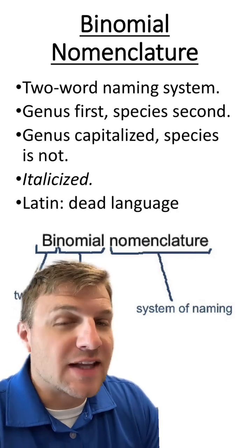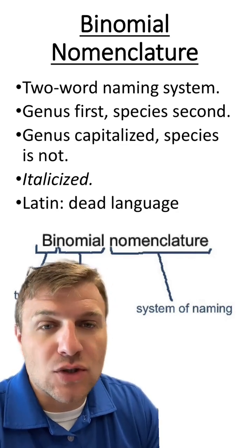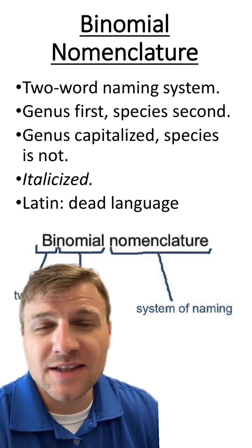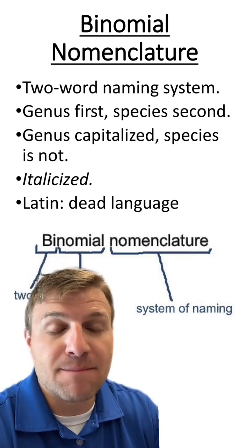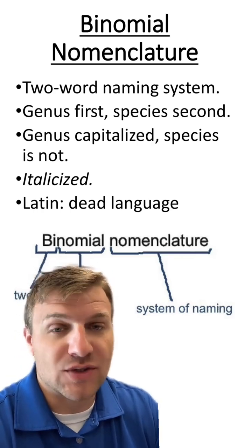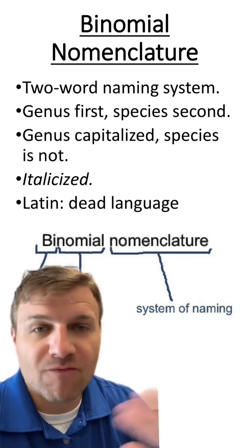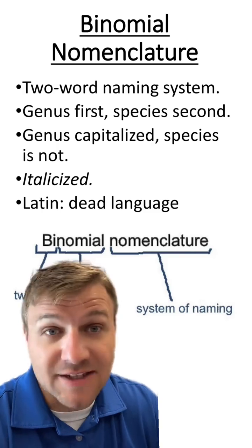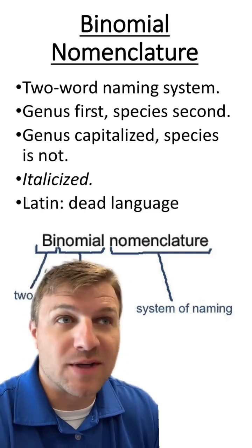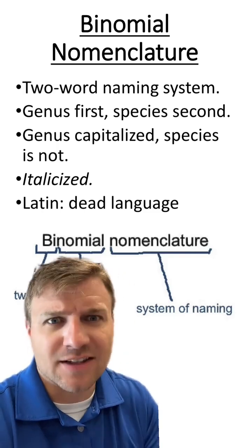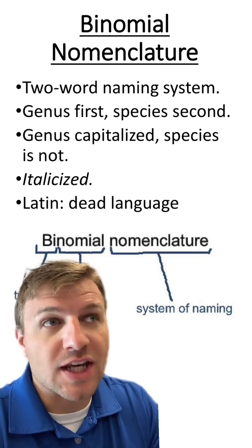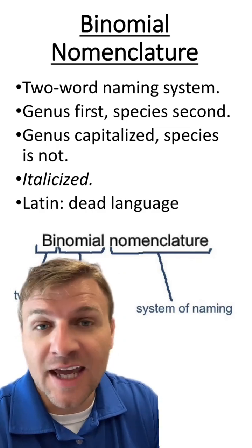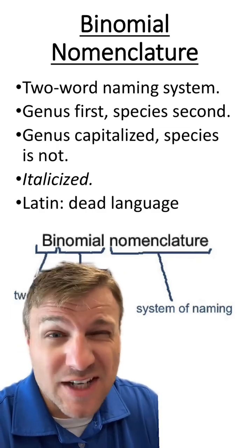Scientists typically use Latin words to identify the genus and species. This is because Latin is a dead language, which means the meanings aren't going to change. For example, the word 'hot' means something that has a high temperature, but today can also mean something that's attractive. So we don't want these words changing their meaning over time, so we use Latin, which is a dead language that no one really uses anymore.